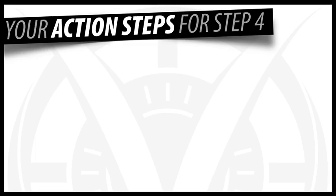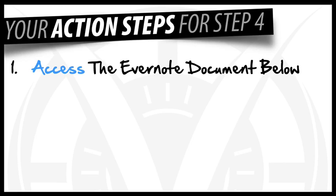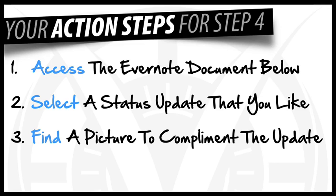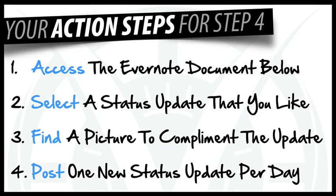Here are your action steps for step four. Number one: access the Evernote document by clicking the link below this video. Number two: select a status update from the document that you like. Number three: find a picture to complement the update by going to Google Images. Number four: post one new status update per day. Once you've completed your action steps for step four, you can continue to step five where I'll show you how to make money with suggestion marketing. I'll see you there.